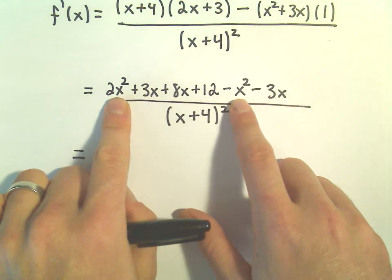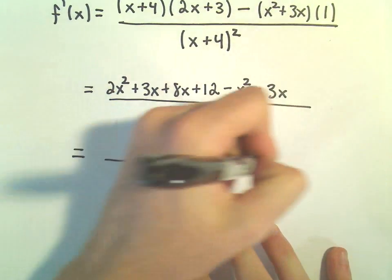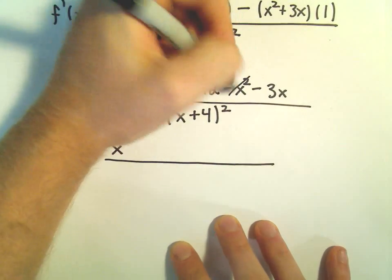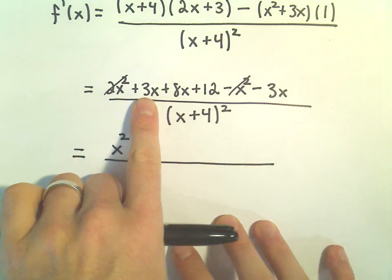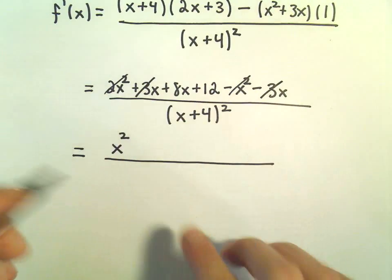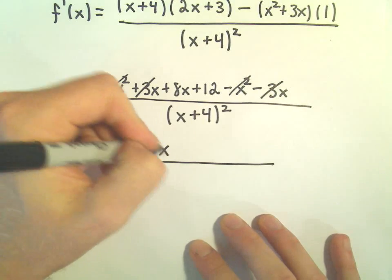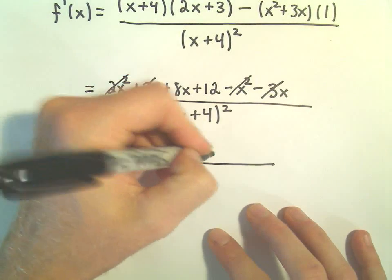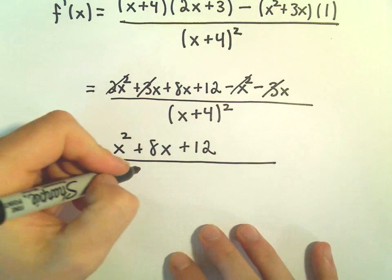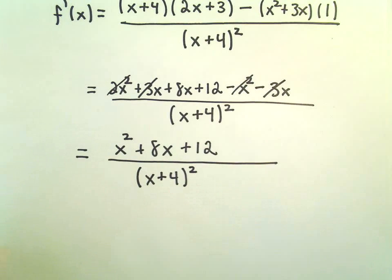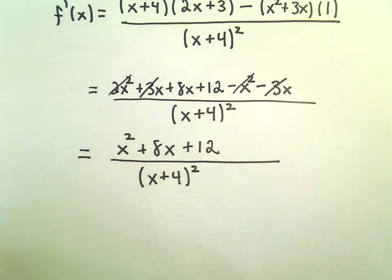Okay, 2x squared minus x squared is going to give us x squared. So that and that is taken care of. We've got a positive 3x and a negative 3x, so that just cancels. We still do have a positive 8x. And then we're still left with our positive 12. And again, in the denominator, we have our x plus 4 squared. Again, I'm not going to multiply that out.